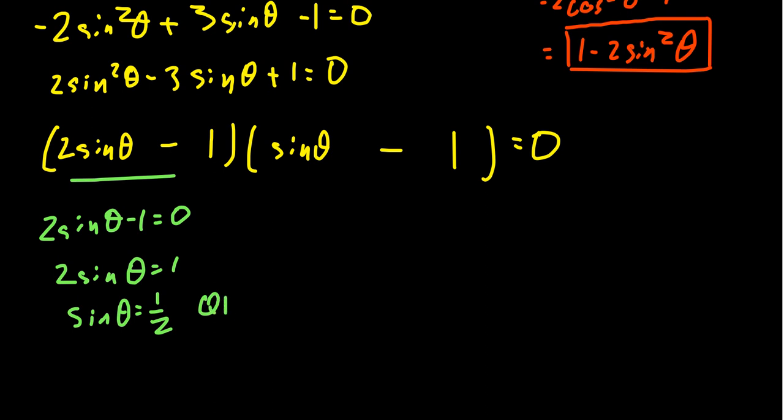When is sine theta equal to one half? That'll happen in the first quadrant, but also in the second quadrant. In the first quadrant, that happens at 30 degrees. In the second quadrant, we want the angle that references 30 degrees, so 180 take away 30, which is 150 degrees.